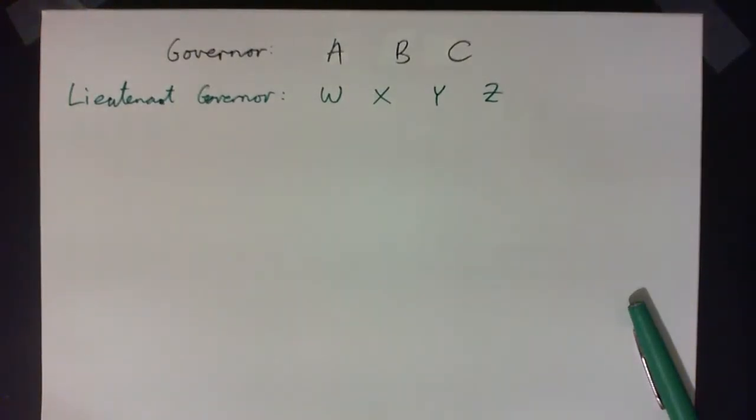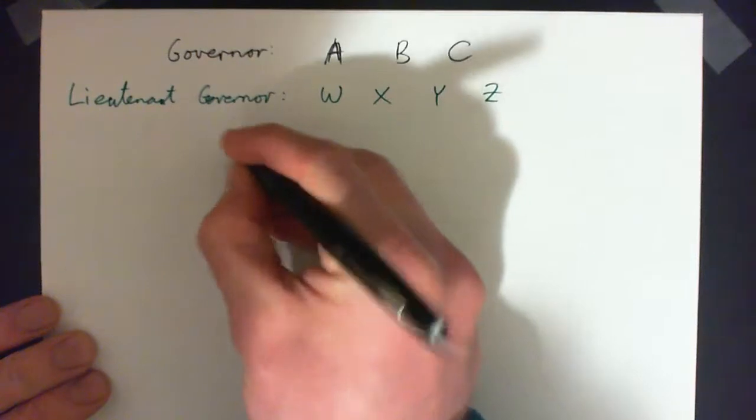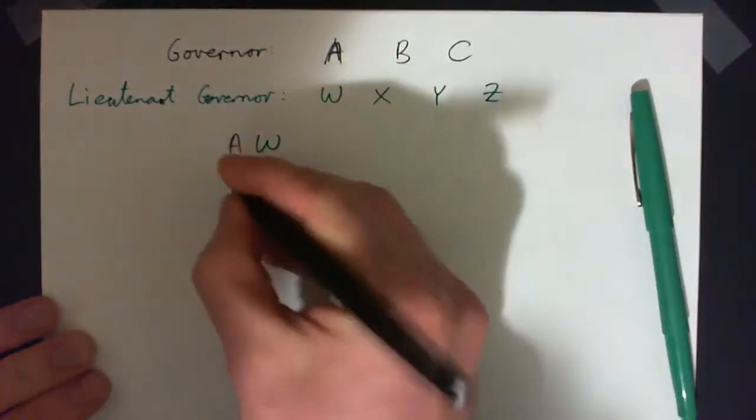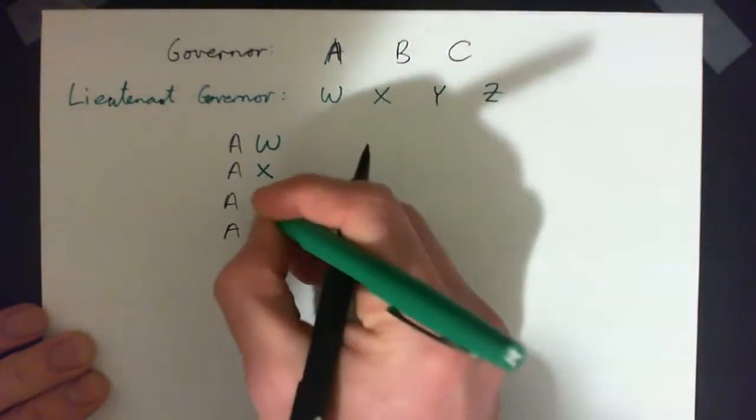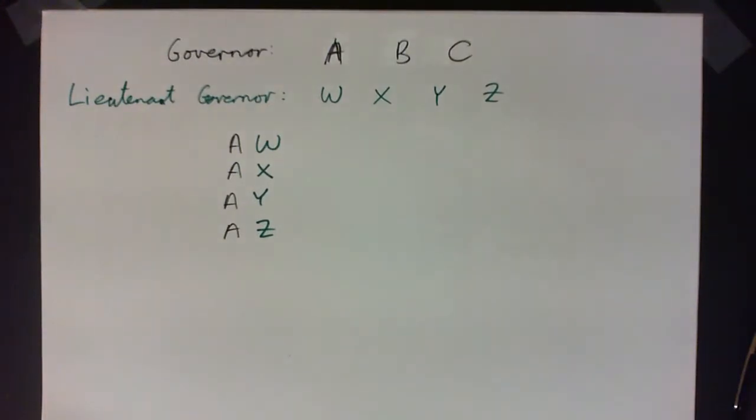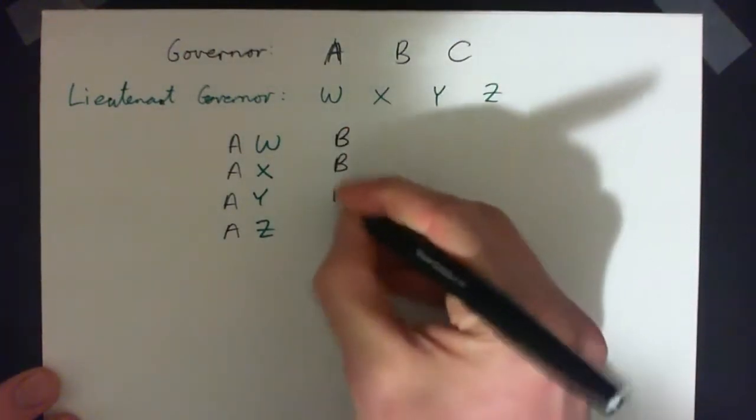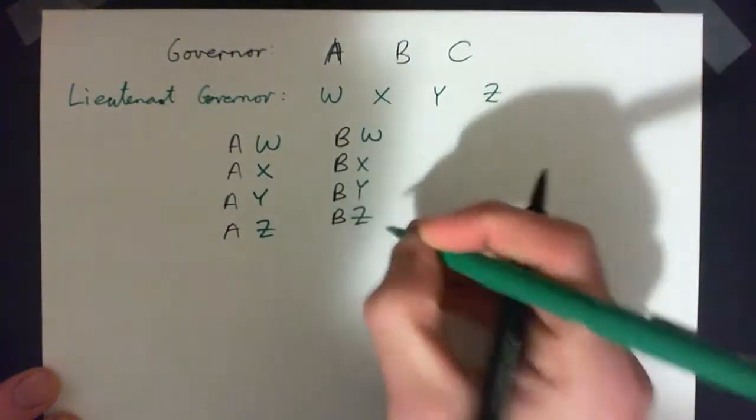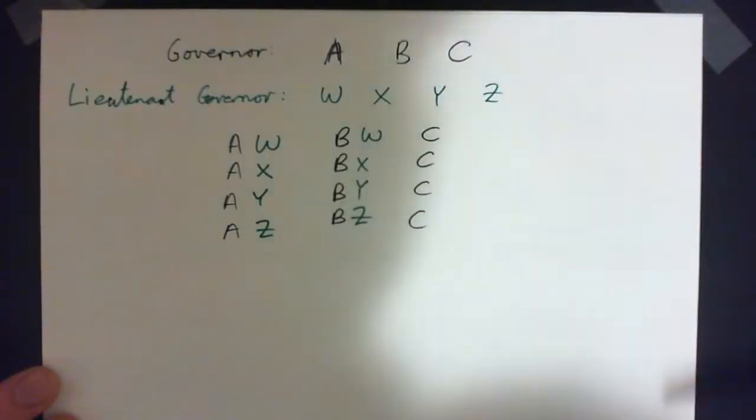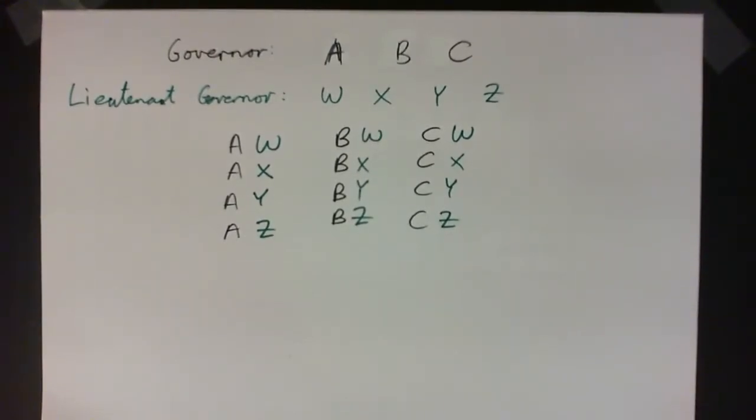So let's just take how many possible ways can we vote for governor and then lieutenant governor. Let's say we decide to vote for candidate A for governor. Then you could vote for W for lieutenant governor, or you could go A, X for lieutenant governor, or A, Y, or A, Z. That's four possible ways there. Or we could vote for candidate B for governor, in which case we could either vote for W, X, Y, or Z for lieutenant governor. That's four possible ways. Or candidate C for governor, in which case we could vote for W, X, Y, or Z for lieutenant.